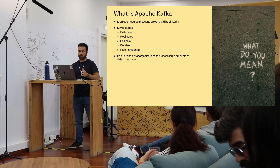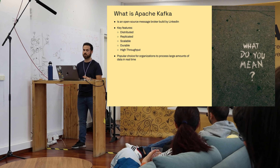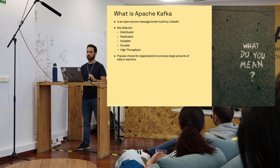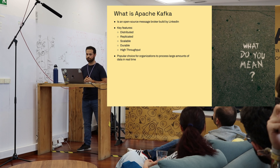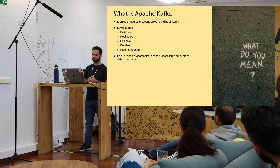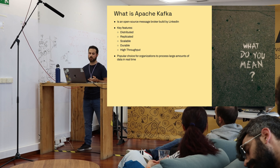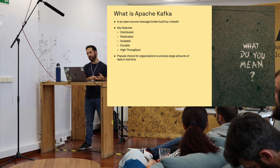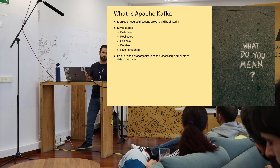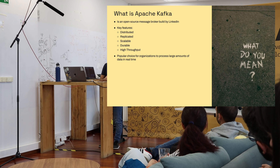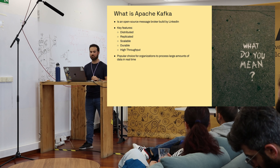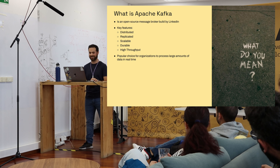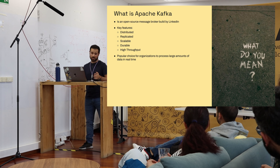What is Apache Kafka? It's an open-source message broker developed by LinkedIn. It uses a publish-subscribe architecture, and its features include being distributed, replicated, scalable, durable, and high-throughput — though those are fancy words, and they may not be entirely true if you don't configure it well. It's used to process large amounts of information in real time.